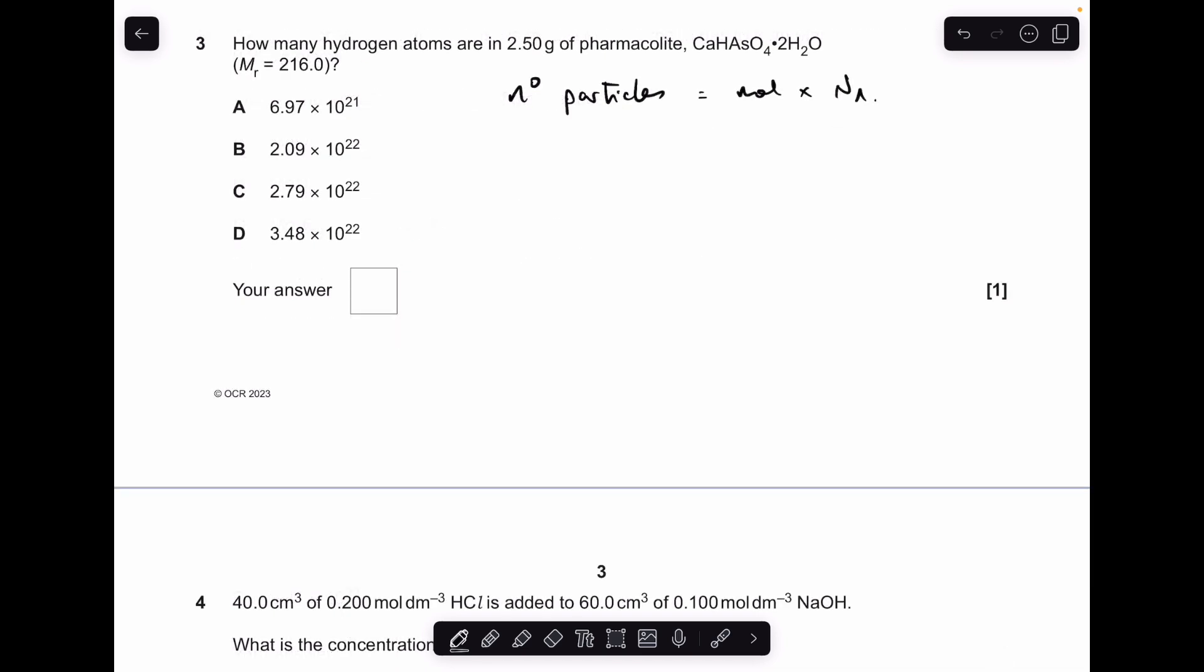Question 3 is a bit like number 1. So the number of particles, moles times Avogadro's number, but this time we're talking about hydrogen atoms. So first we need to work out how many moles of this pharmacolite we've got. That's just mass over MR. That's coming out at 0.0157 moles. So the moles of hydrogen is going to be 5 times that, because every mole of this pharmacolite has 5 moles of hydrogen. So we need to multiply this by 5 now. That's 0.0579 moles of hydrogen atoms. So we just need to multiply this now by Avogadro's number, which gives 3.48 times 10 to the 22. So option D was the answer.